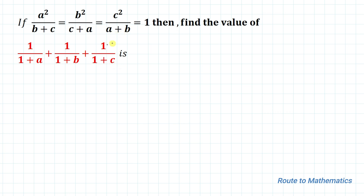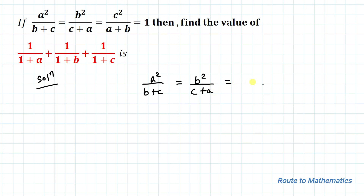So here we are given an equation from which we are asked to find the value of the given expression. Without any delay, let's start the solution. The given equation is a² divided by (b+c) equals b² divided by (c+a) equals c² divided by (a+b) equals 1. Let's take this as equation 1.